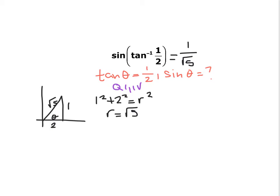These questions are very similar to chapter 5 questions. In chapter 5, I would word it as: tangent of θ equals 1/2, with θ between −π/2 and π/2 — what is the sine of this angle? Now I'm wording it differently: tangent inverse of 1/2 equals some angle θ, and what's the sine of that angle? The whole inverse trig expression is just an angle — you get an angle out of an inverse trig function.